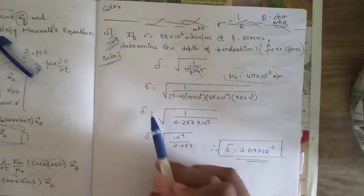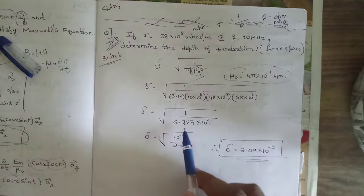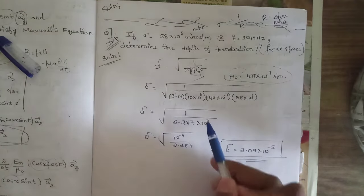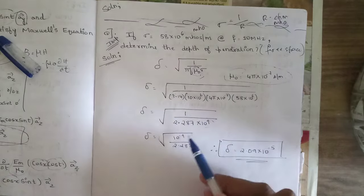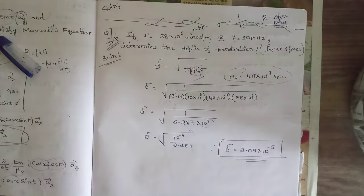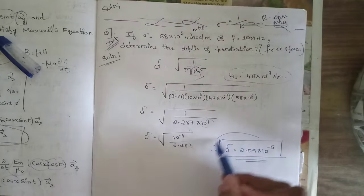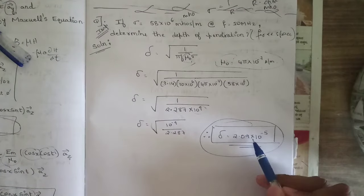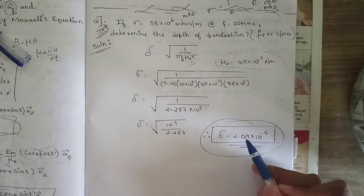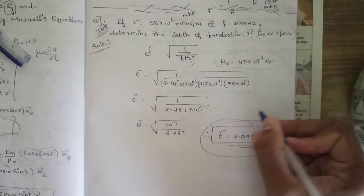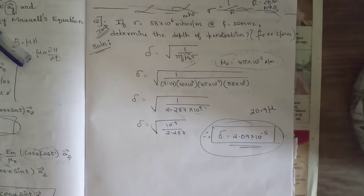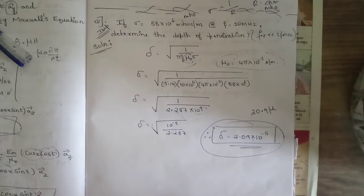Simplifying: δ = √(1 / 2.287 × 10⁹) = √(10⁻⁹ / 2.287). Evaluating this gives δ = 2.09 × 10⁻⁵ m, or simply 20.9 micrometers. This is the depth of penetration for the given problem.